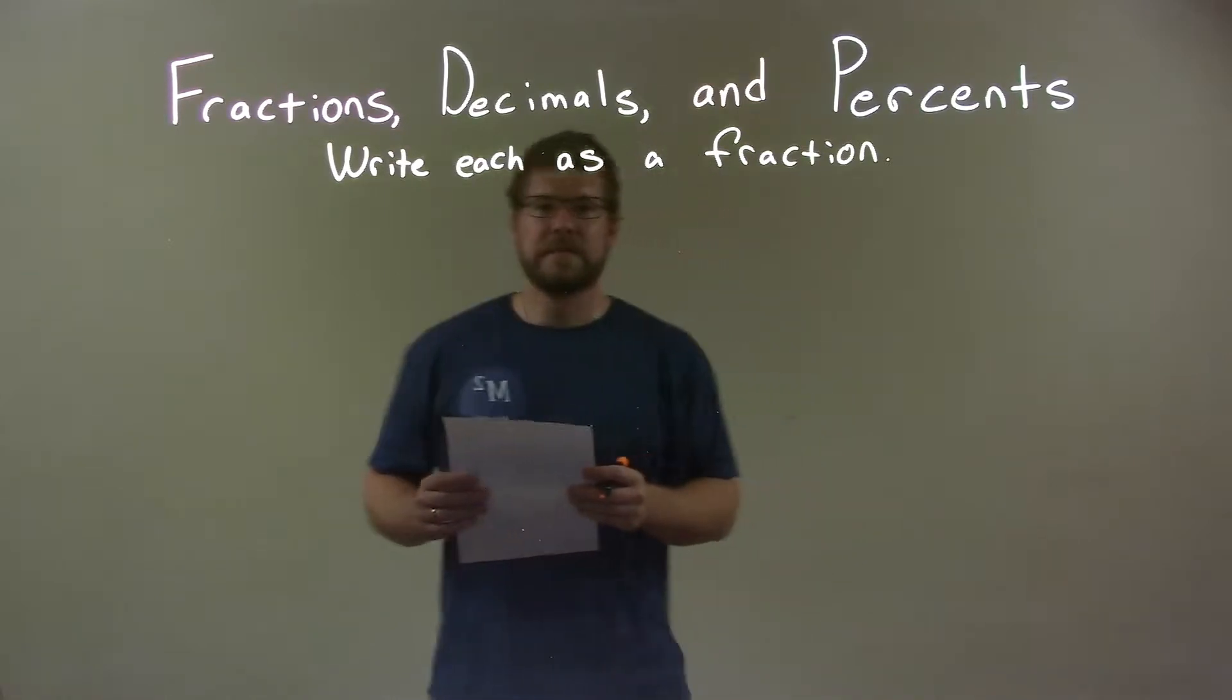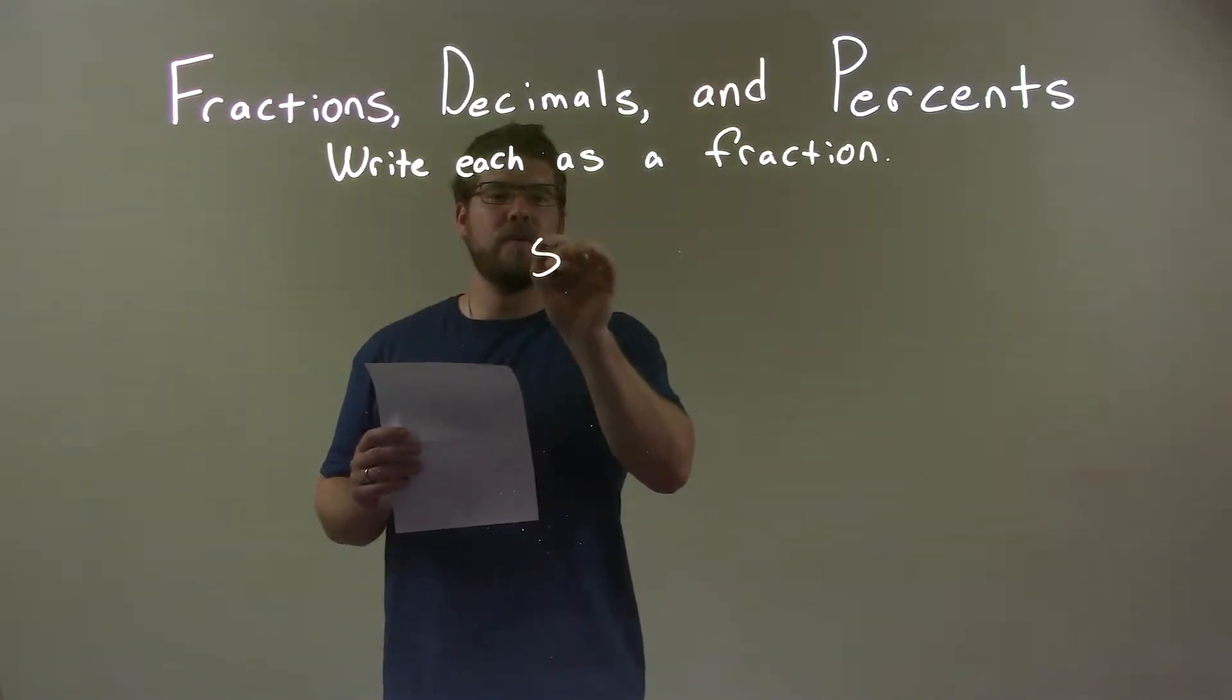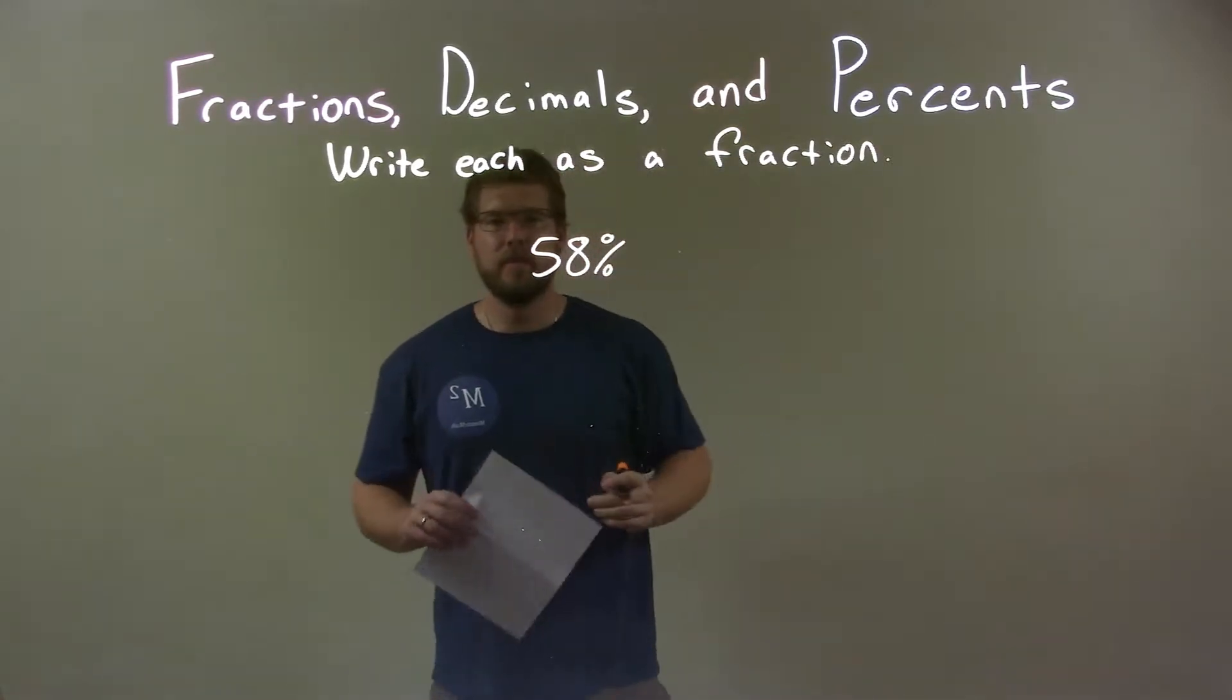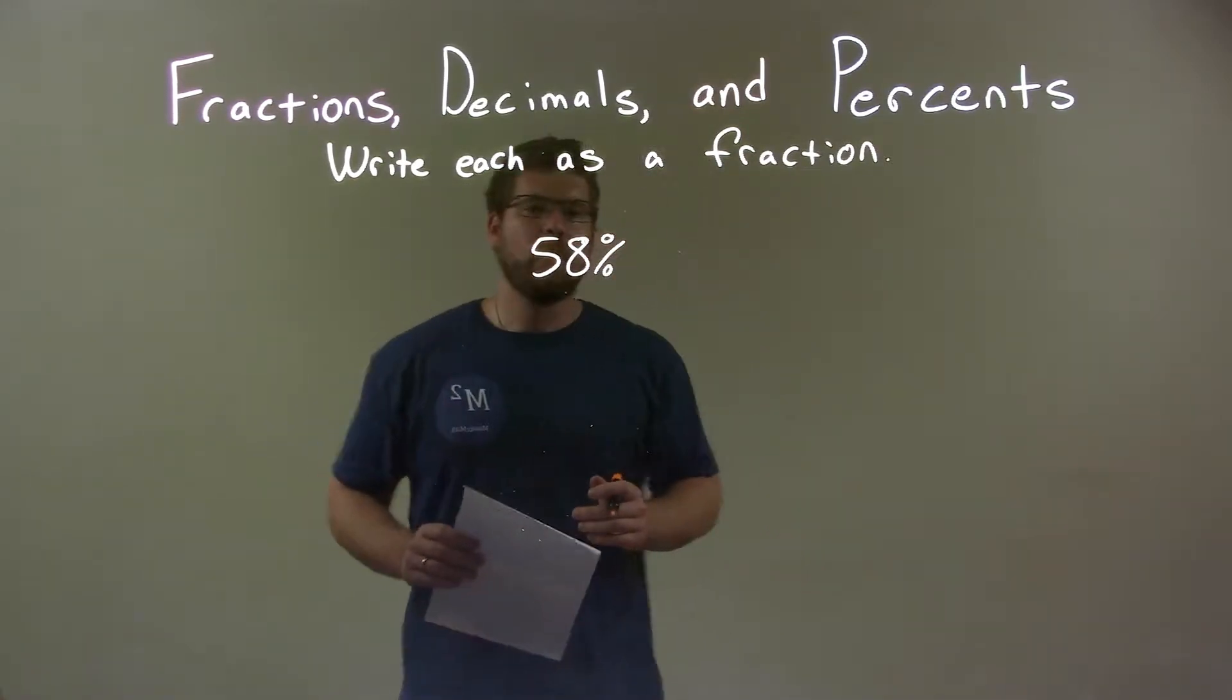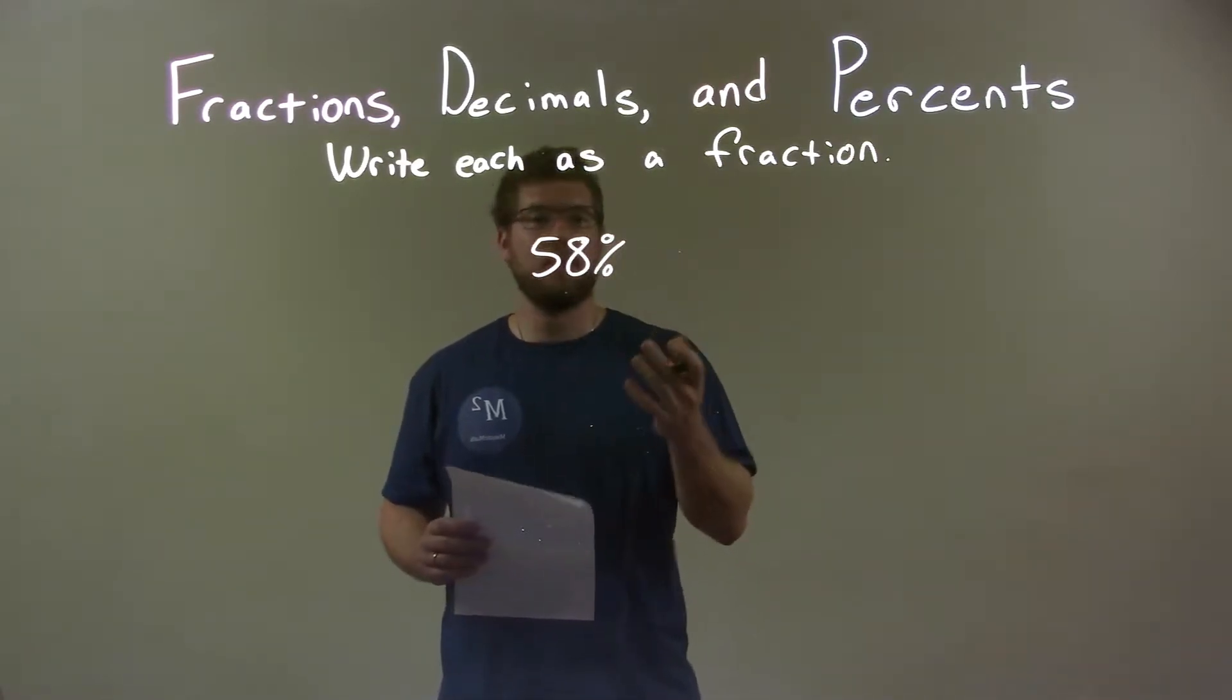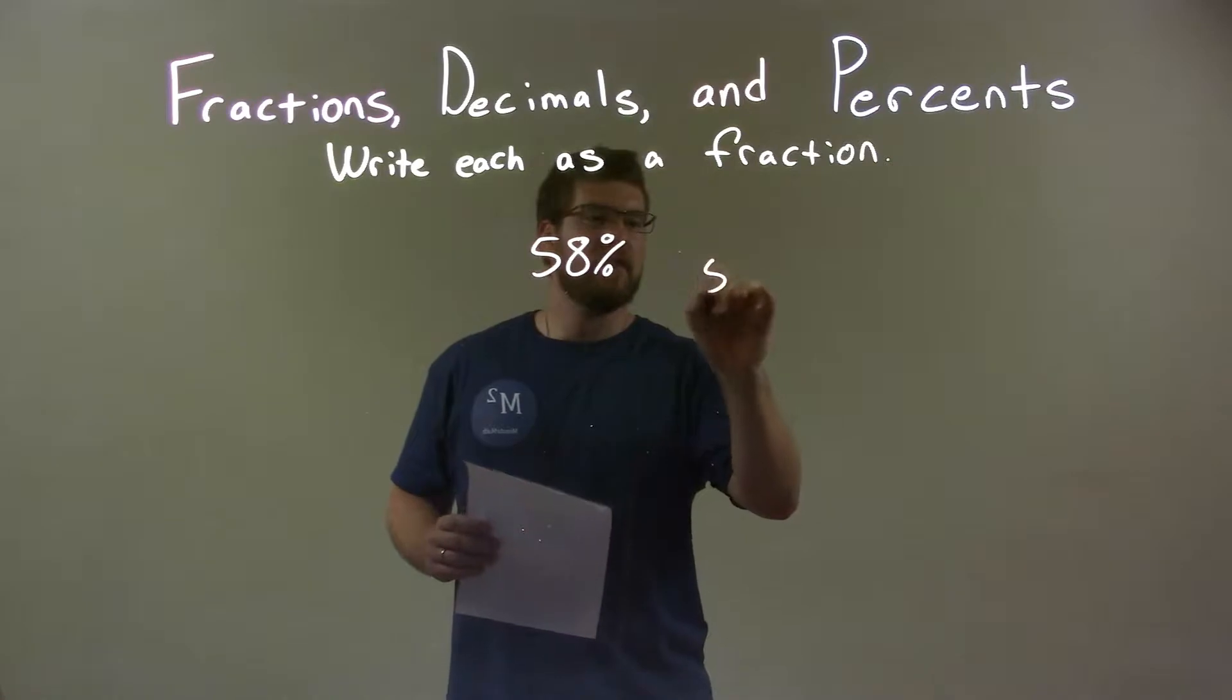So if I was given this percent, 58%. So I have 58% right here. Well first I need to write this out of 100, right? So 58% is the same thing as 58 out of 100. So I have 58 out of 100.